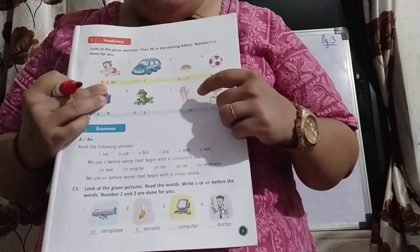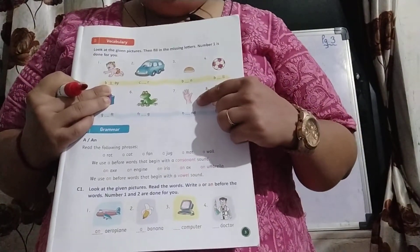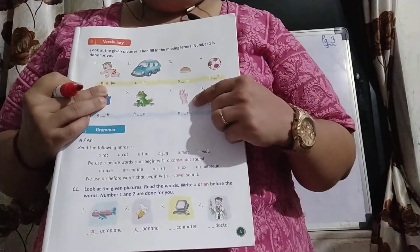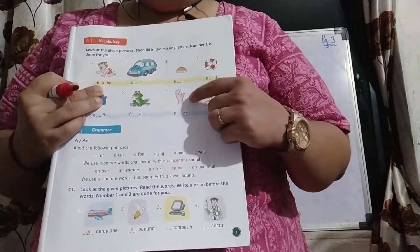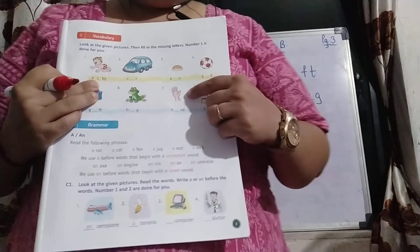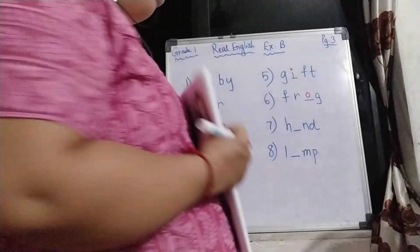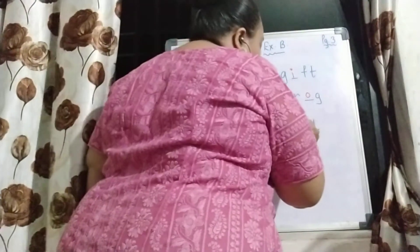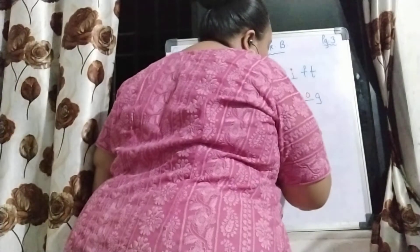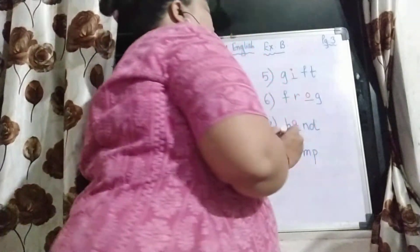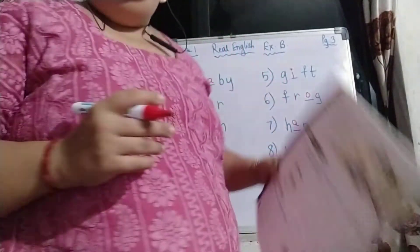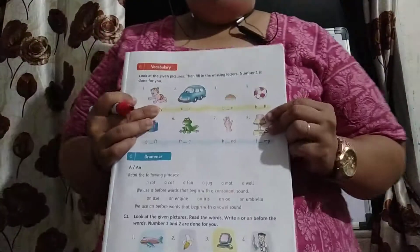Number 7 — hand. This is a hand. The spelling of hand is H-A-N-D. Hand.